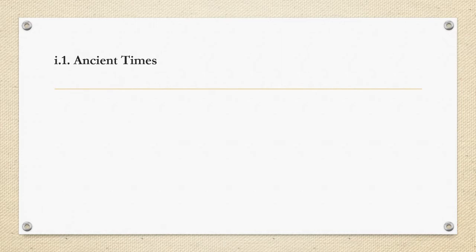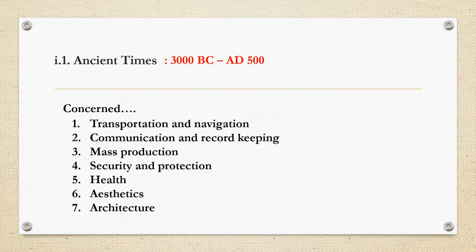The ancient times occurred around 3,000 BC to AD 500 — that means 3,000 years before Christ and 500 years after the death of Christ. The ancient times were more concerned with transportation and navigation, communications and record keeping, mass production, security and protection, conservation of life, aesthetics for beautification, and architecture for engineering.